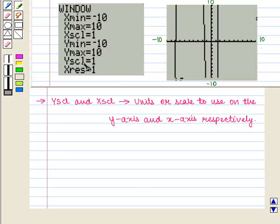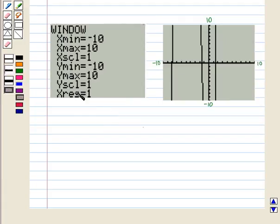Yscl and Xscl are the units or scale to use on the y-axis and x-axis respectively. If Yscl is equal to 1 then each interval on the y-axis is 1 unit. And if Xscl is equal to 1 then each interval on the x-axis is 1 unit.